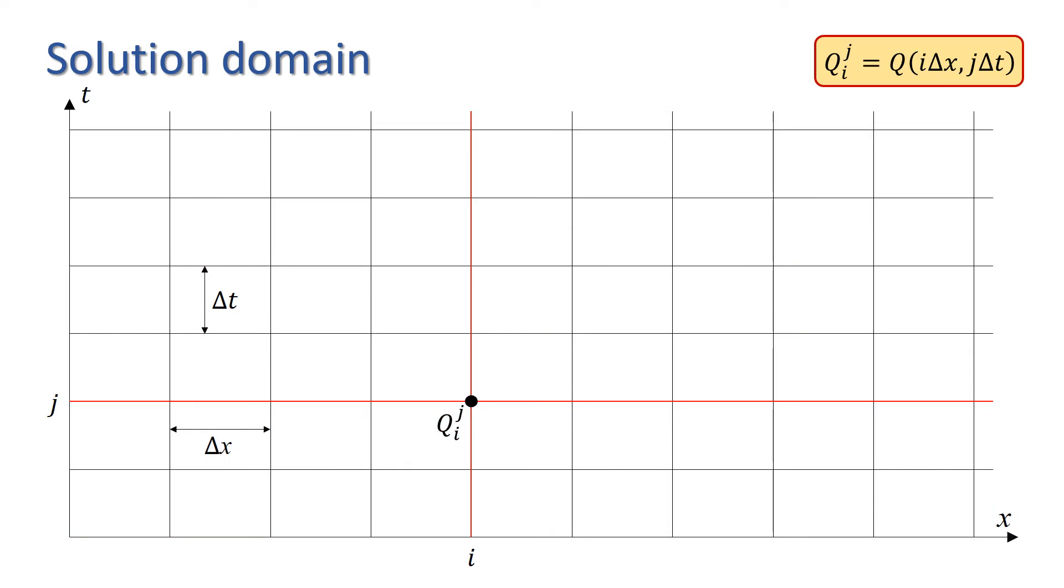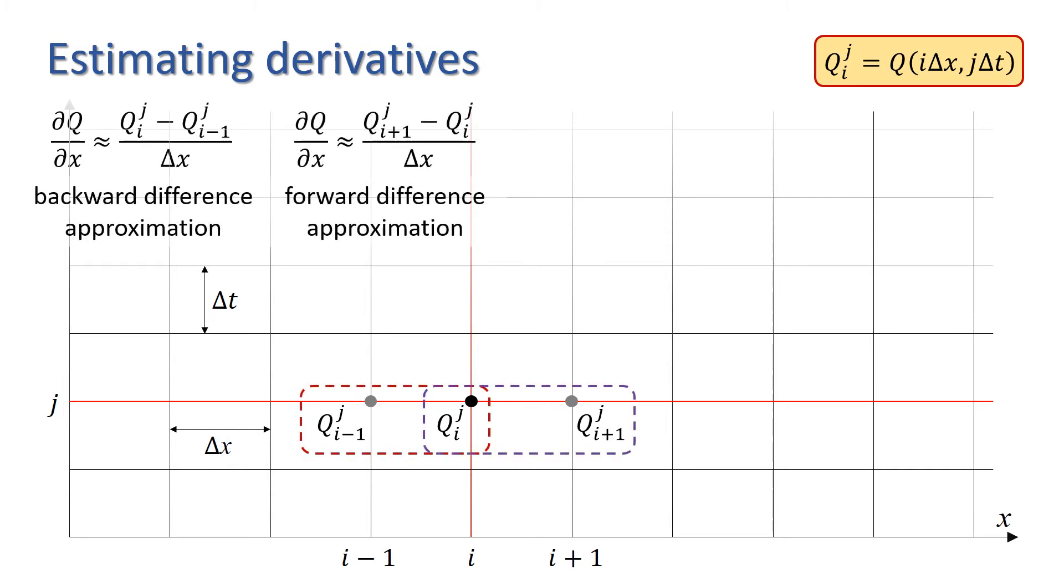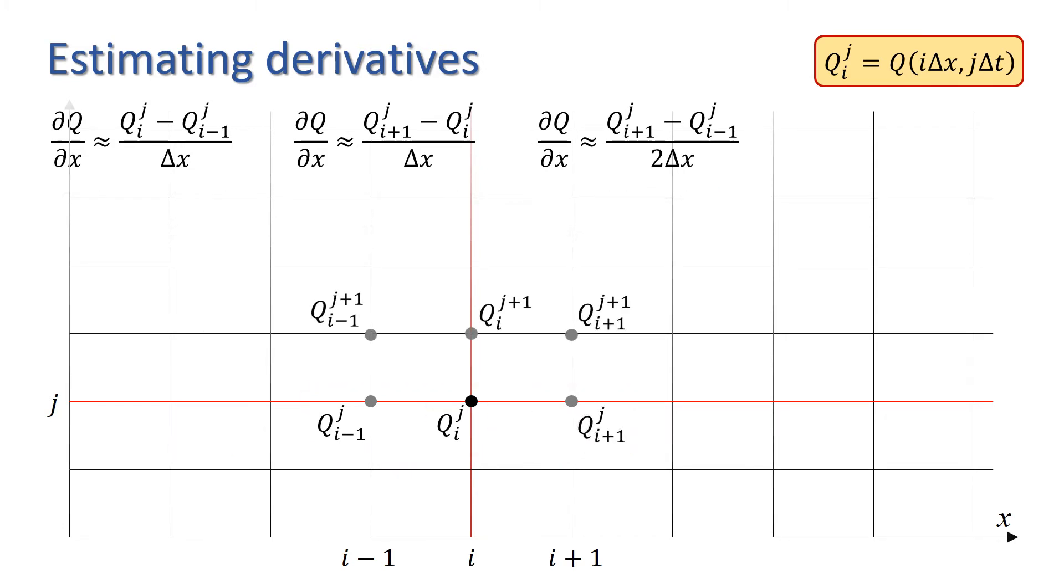In order to estimate the derivatives of Q with respect to x, we'll need to consider points to the right or left of ij, i.e., i minus 1j and i plus 1j. We have three straightforward options for estimating dQ/dx: we could use a backward difference approximation, a forward difference approximation, or a central difference approximation. Or we could use any of those approximations evaluated at time step j plus 1.